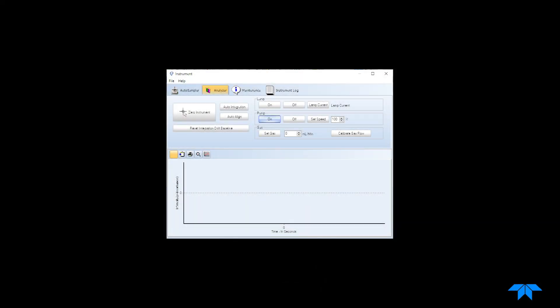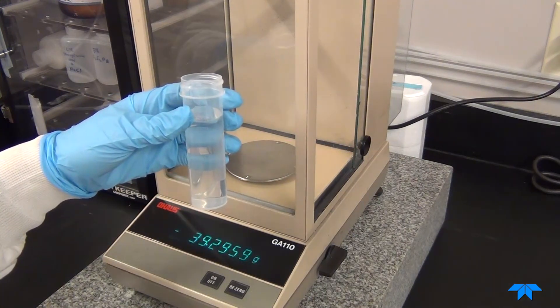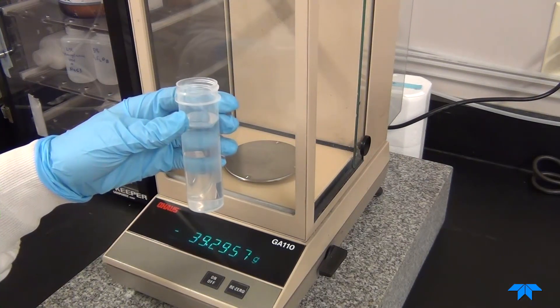In the instrument controls tab of the QuickTrace software, set the analyzer pump speed to one hundred percent. Now we are ready to begin.